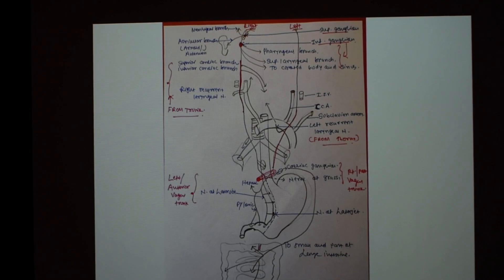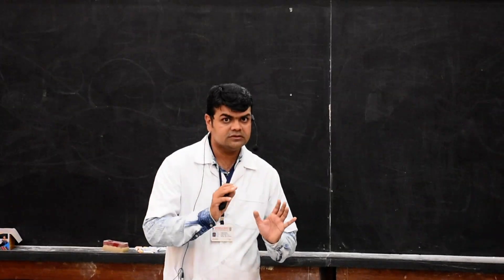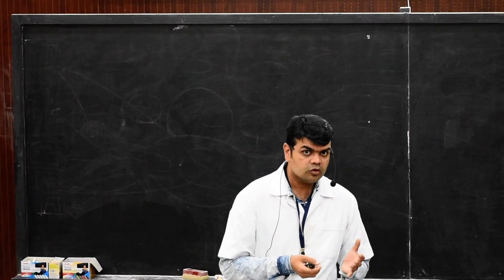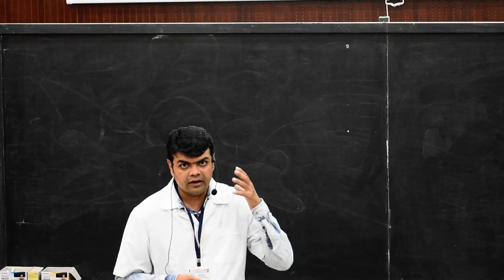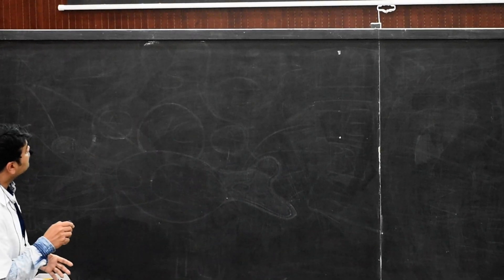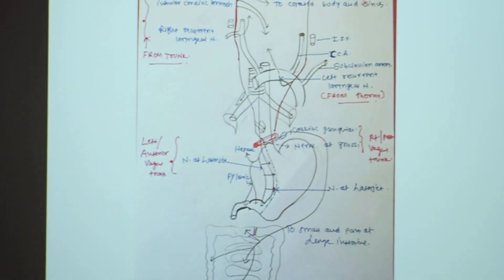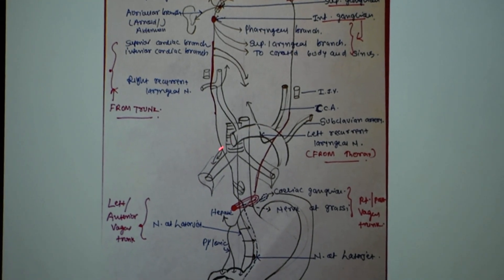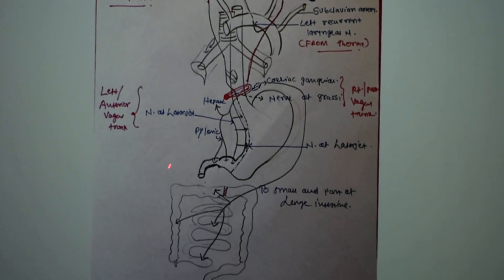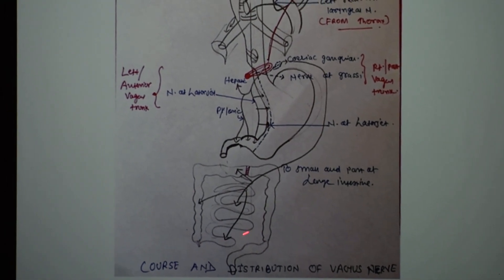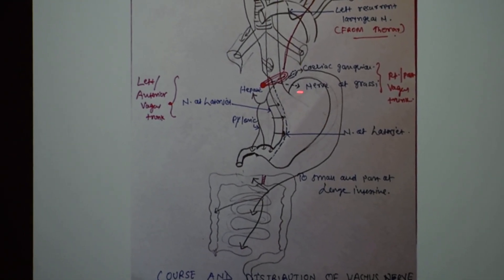The vagus nerve is also known as the pneumogastric nerve. 'Pneumo' means it is related to the respiratory system, and 'gastric' means related to the alimentary system. So it not only supplies the head and neck portion but also the thorax and abdomen. In the thorax it lies behind the root of the lung.